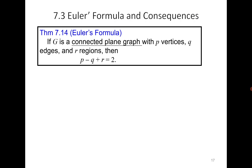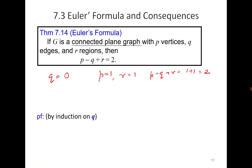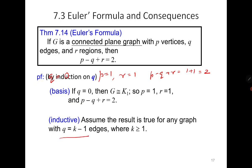Now let's think about how to prove Euler's formula. As we've discussed, when numbers are involved, one of the best approaches is mathematical induction. We will use induction on q. For the base case q=0: if q equals 0 and the graph is connected, then p equals 1 and r equals 1, giving p minus q plus r equals 1 minus 0 plus 1 equals 2. The result holds.